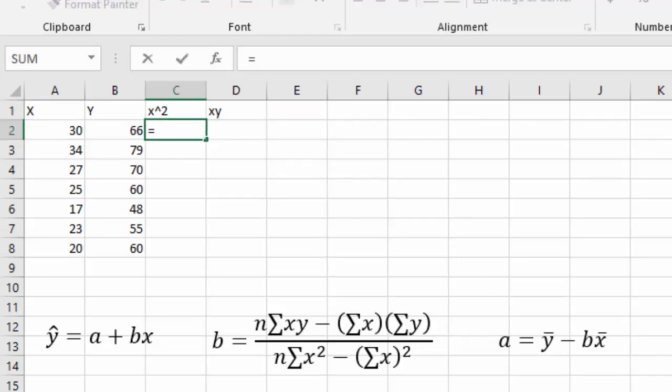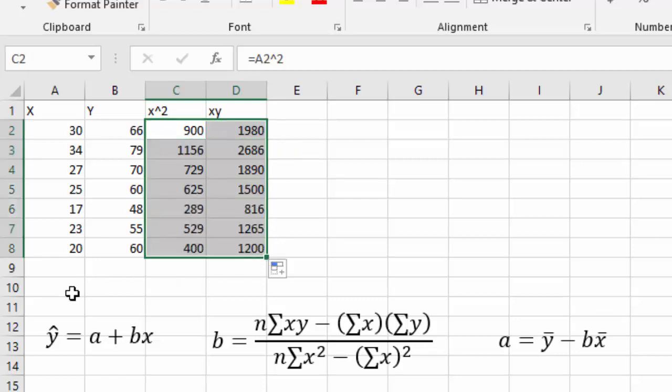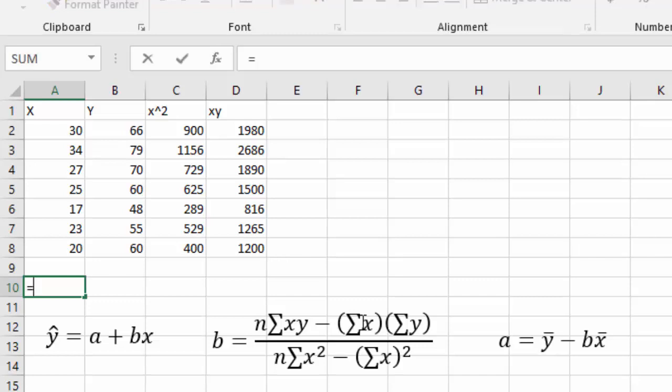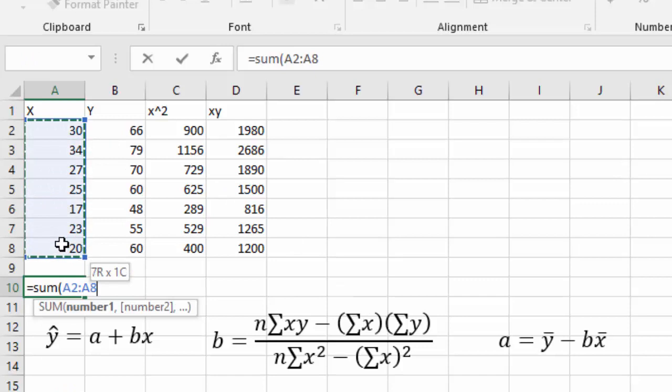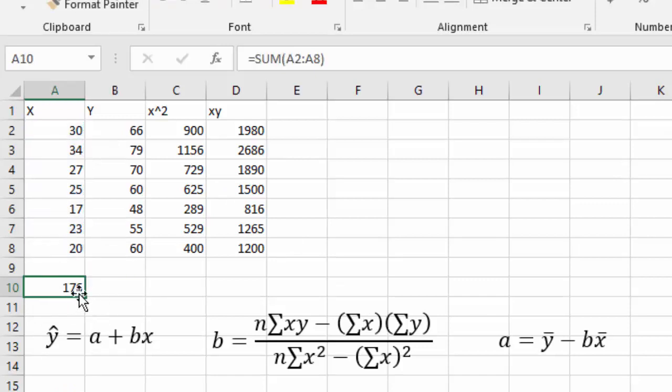Let's build the x squared column by hitting equals, select the x and squaring with shift 6 and then 2. For xy we'll say equals, click the x times and click the y. Selecting those two cells we'll drag it down clicking the box in the bottom right corner and then in row 10 here I'm going to put a row of the sums. Sum of the x's by selecting those values then I'll grab that box in the bottom right corner and stretch it across.